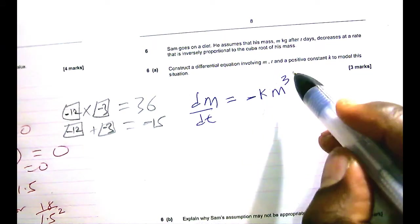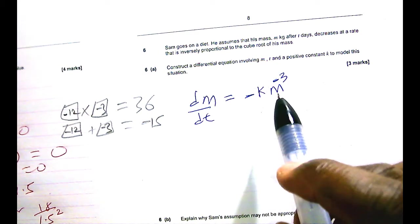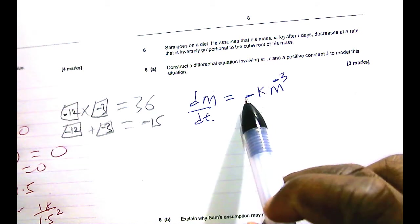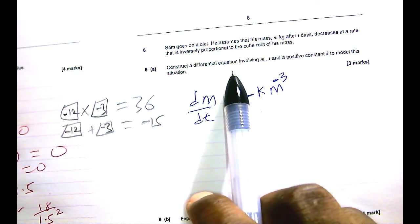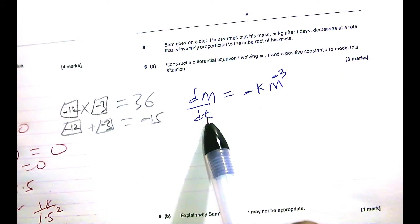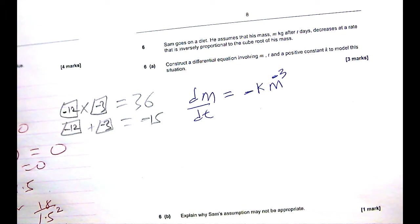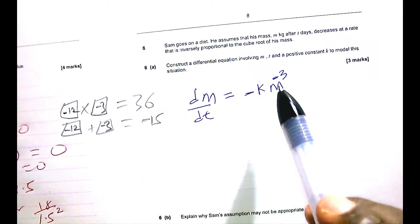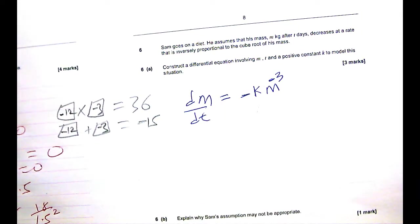I should put a stroke there. But rather than put a stroke there, I would just be kind enough to put a minus sign, which tells you that it's actually k over m to the 1/3. We remind us there. Alright. So, construct the differential equation involving m, t, and the constant k. We have just done that. You get 3 marks because of the fact that you've put m to the 1/3, because you've put in negative, and because you've put the dm/dt instead of m.